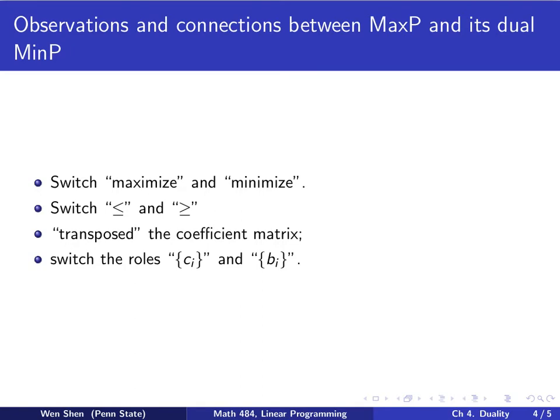We see that maximizing is switched with minimizing, and then in the constraint, the less than equal and bigger than equal are switched. And also, the third part, if you look at the coefficient as a matrix in its position, then you see you transposed it. And then you also switched the rows of the coefficient ci with the bi, with the rows.